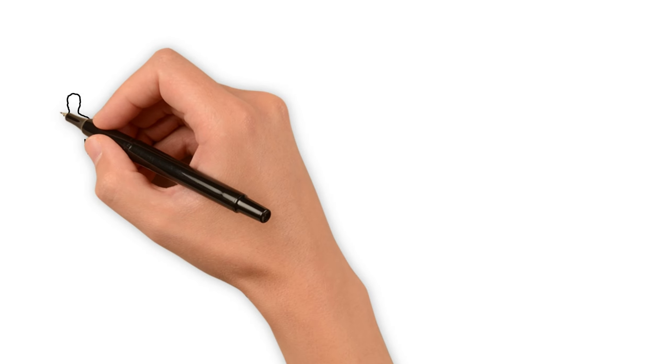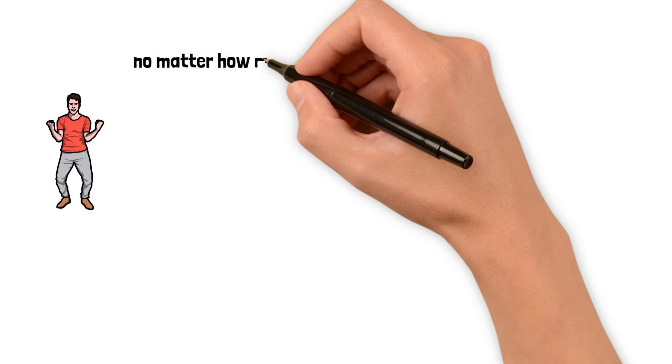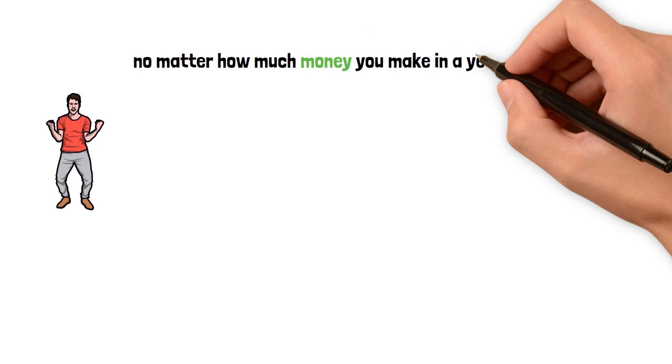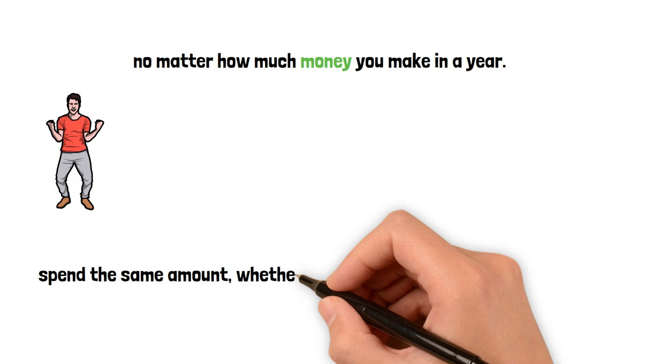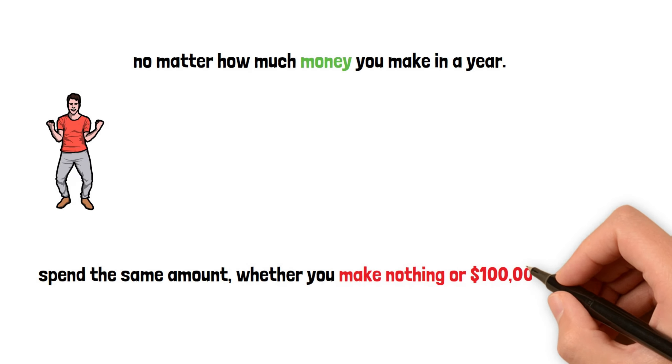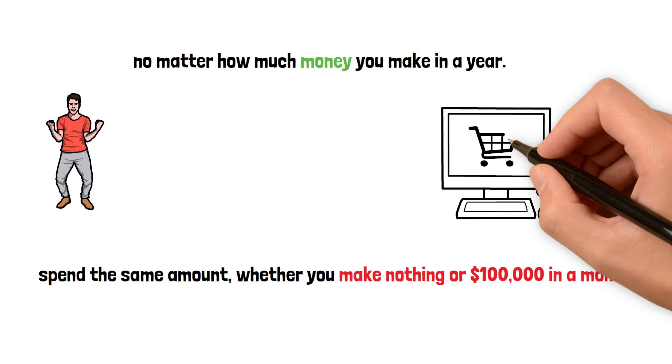One way to retire before 30 is to live like you're broke, no matter how much money you make in a year. The idea is to consistently spend the same amount, whether you make nothing or $100,000 in a month. I know this might seem extreme, but if you want to retire early, you have to pay attention to your spending, not your income.